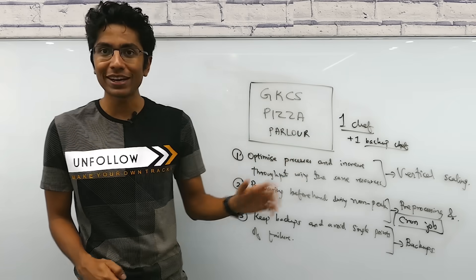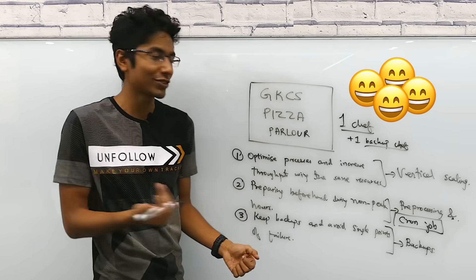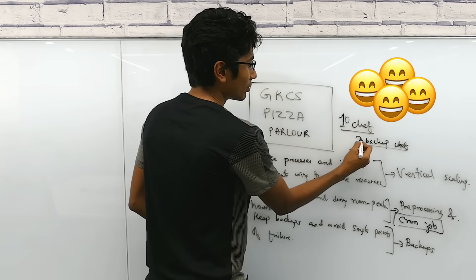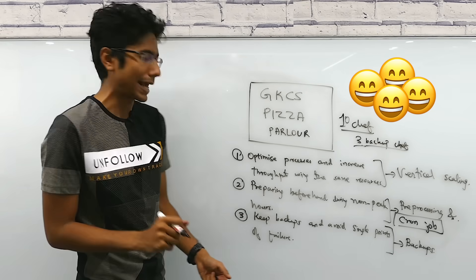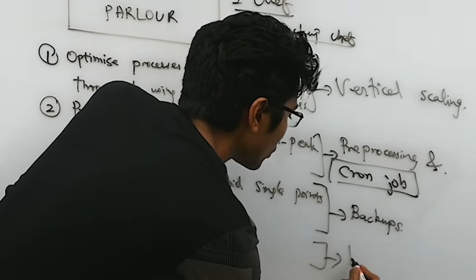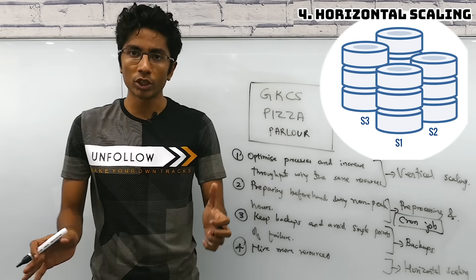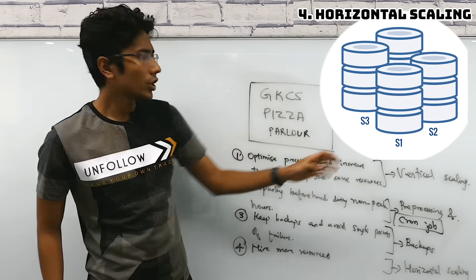Now, if your business keeps growing every time, then you better make that backup chef a full-time chef. In fact, hire more chefs. Let's say instead of one chef, you have now 10 chefs and a few in backup also, just in case. Hire more resources, which maps to horizontal scaling. Horizontal scaling is buying more machines of similar types to get more work done.